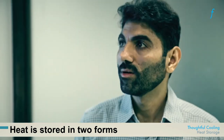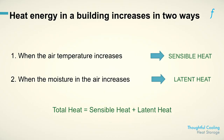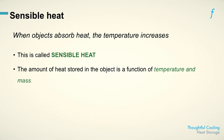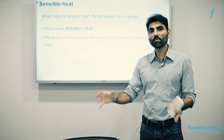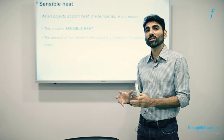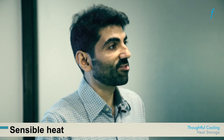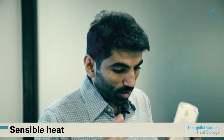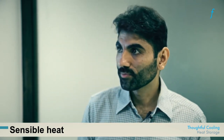When air temperature increases, sensible heat increases. When moisture in the air increases, latent heat increases. When an object absorbs heat, its temperature increases — that's sensible heat — and it is a function of both temperature and the mass of the object. Two objects at the same temperature: the one with more mass has a higher total amount of sensible heat energy. This is an extensive property — the more mass you have, the more total heat it contains.